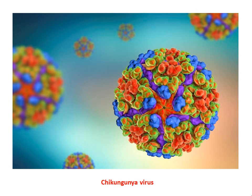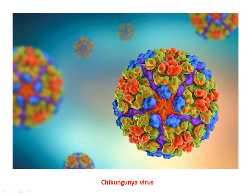This slide shows the Chikungunya virus structure. It is very similar to that of coronavirus. But the difference is that the spike proteins or the antigenic determinants present on the surface of the virus are quite different. The antigenic determinants or spike proteins on the body surface are very peculiar, particular, and unique — they differ in each of the viruses.